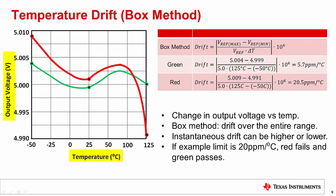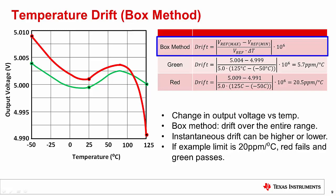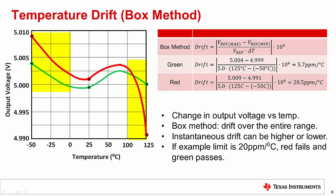Temperature drift is a change in output voltage over temperature. This drift is normally very non-linear for references, as it uses design techniques and trim to get a relatively flat temperature response, leaving a non-linear residual error. The box method is used to calculate temperature drift by looking for the largest change in output voltage over temperature. In this example, the drift from 0 to 50 degrees Celsius is relatively flat, whereas the drift at low and high temperatures is much higher. The box spec gives the drift across the entire range, and is tested at key points: negative 50, 25, and 125 degrees Celsius.